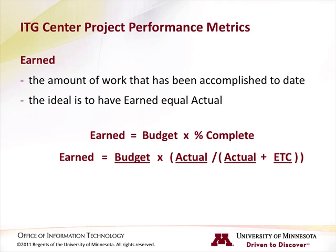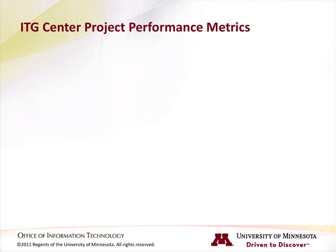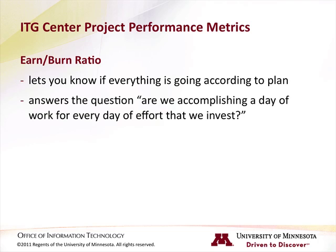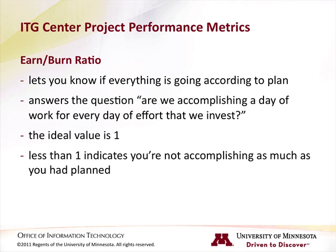Next, let's look at the earned-burn ratio. The earned-burn ratio is the metric that is most often referred to, and basically it lets you know if everything is going according to plan. It helps to answer the question: are we accomplishing a day of work for every day of effort we have invested? The ideal value for the earned-burn ratio is 1. In general, values less than 1 indicate that for the work you're doing, you're not accomplishing as much as you had planned.